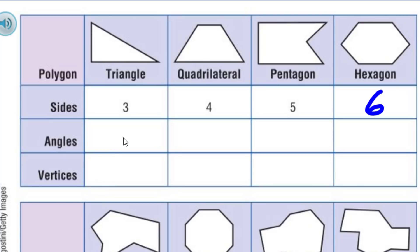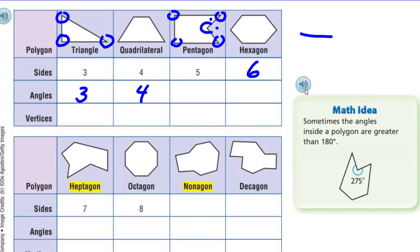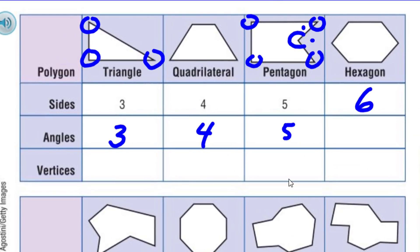A triangle has three angles — that's where two line segments meet to create an angle. A quadrilateral has four angles. For the pentagon, this is tricky because one angle looks a bit like a pac-man shape. Let's count: one angle here, two, three, four, and this one here is going the opposite way, but it's actually an angle larger than a straight line — larger than 180 degrees. Sometimes the angles inside a polygon are greater than 180 degrees. So we have five angles here, and six angles for the hexagon.